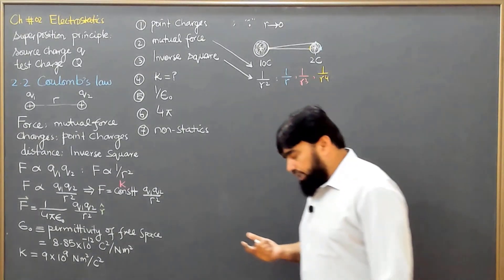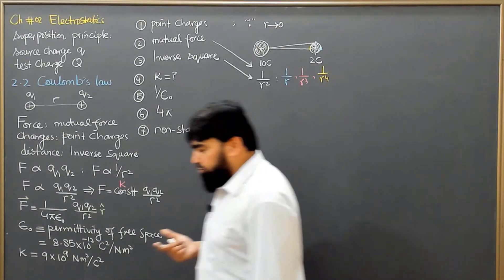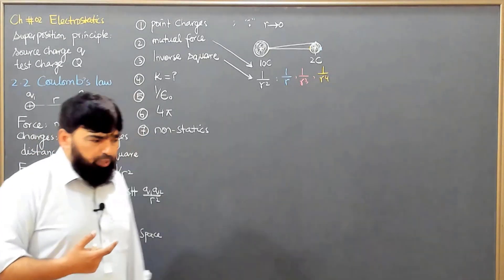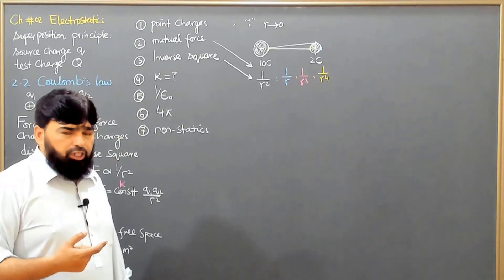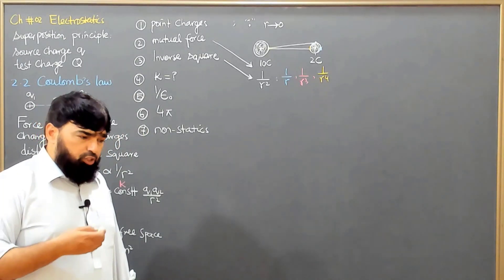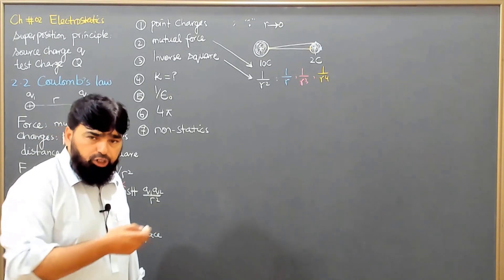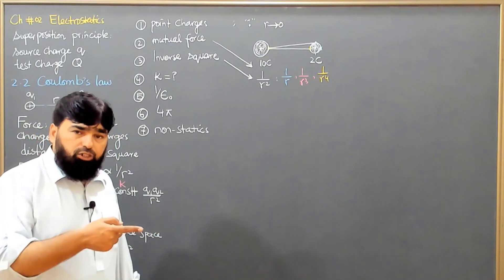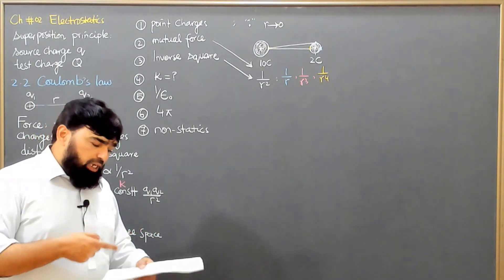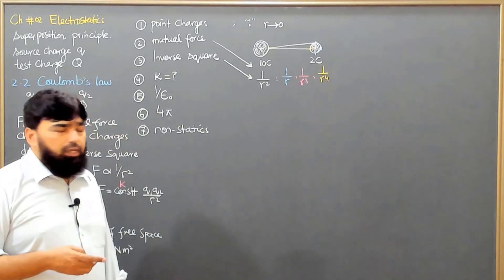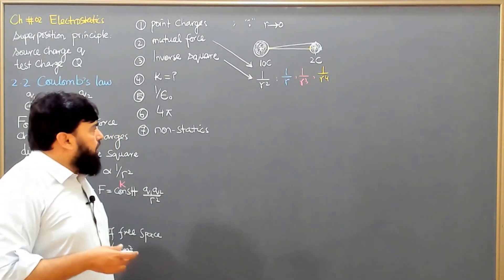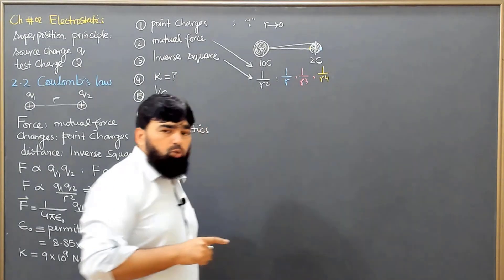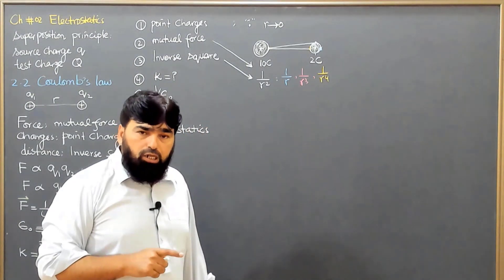Similarly, if our geometry changes such that instead of point charges we have a line charge — meaning charges are distributed along one line — then in that situation the field will be equal to 1 over r.